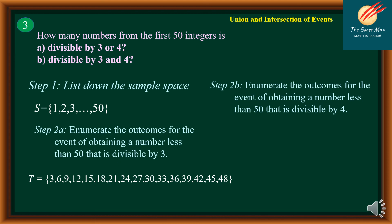Next, we enumerate the outcomes for the event of obtaining a number less than or equal to 50 that is divisible by 4. So we have 4, 8, 12, 16, 20, 24, 28, 32, 36, 40, 44, and 48.